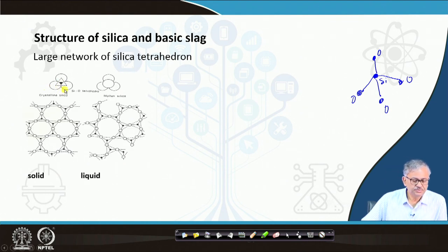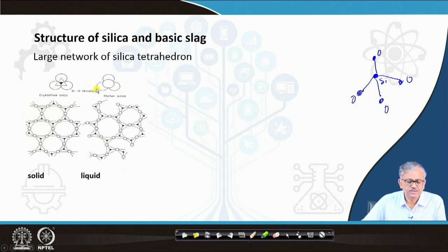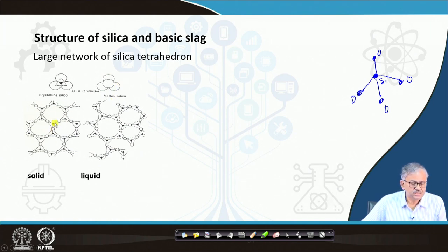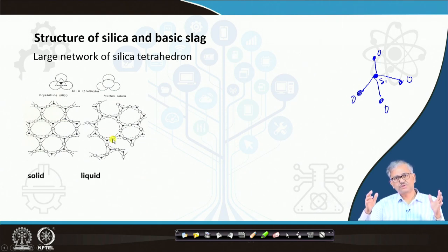In the silica tetrahedron, silicon sits at the center and the four corners have four oxygen atoms - this is a two-dimensional view of the silica tetrahedron. In the solid structure, these tetrahedra form a huge polymeric network. In liquid silica, some bonds may be broken, but it is also still a huge network of tetrahedra.